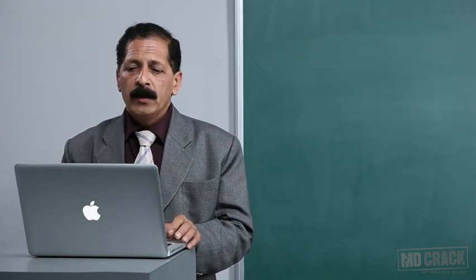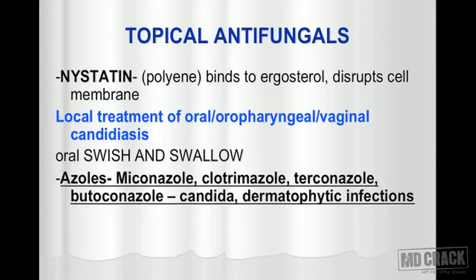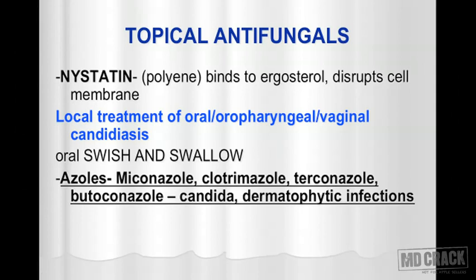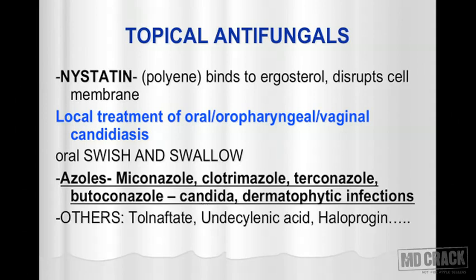The second group of topical antifungal agents is the azoles — for topical use, miconazole, clotrimazole, terconazole, and butoconazole are preferred. These are used topically for Candida and dermatophytic infections. Other topical antifungal agents include tolnaftate, undecylenic acid, and haloprogin.